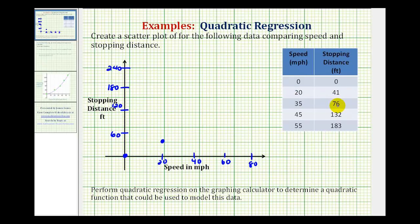Then we have 35, 76, so somewhere in here. 45, 132, somewhere in here. And the last point would be 55, 183, somewhere here.